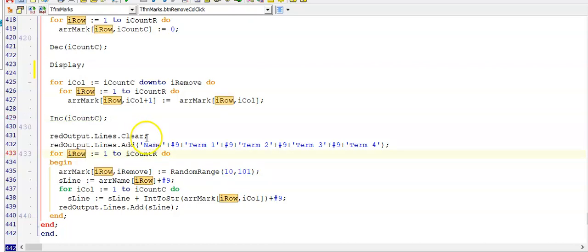Here at the end, I'm just clearing my reach edit and adding my headings. And since I'm displaying in my reach edit, I always have to start with a for loop for the row because I'm displaying in a reach edit row by row.